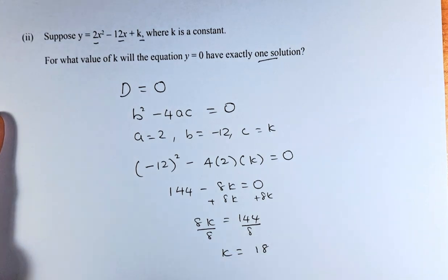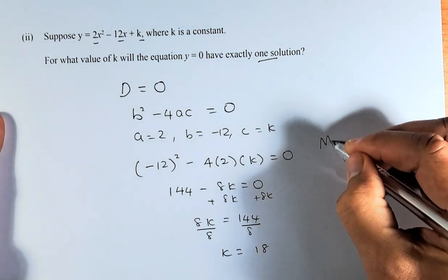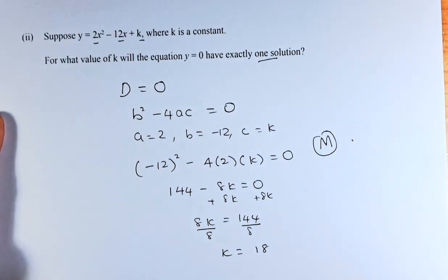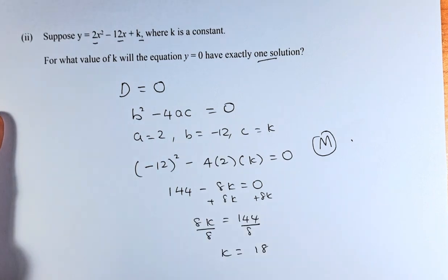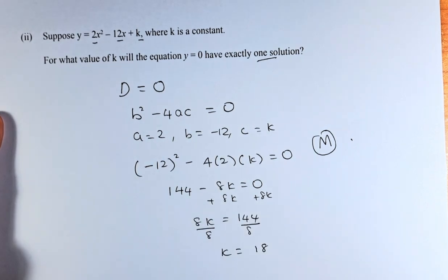So the answer for k is going to be k = 18, because 144 divided by 8 is going to be 18. If you can answer part 1 and part 2, you will get a merit in this paper. Two solutions are going to be greater than 0. If there is no solution, it will be less than 0.